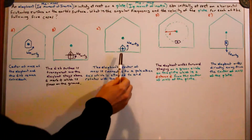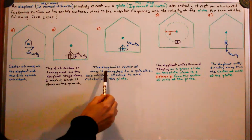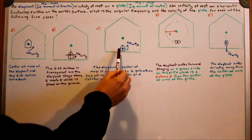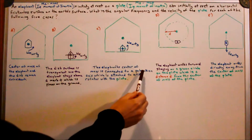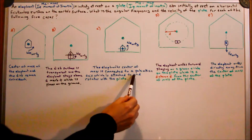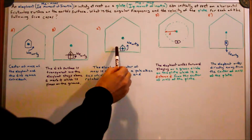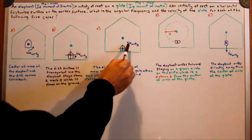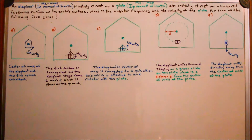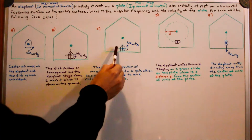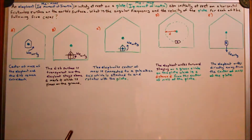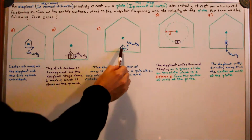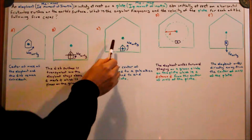Case C: the elephant's center of mass is connected to a pole, and the pole is on the plate with an axis which is attached to and rotates with the plate. So there's an axis here; the elephant is spinning around again with respect to ground at angular frequency omega sub e, and his center of mass is rigidly attached to a pole which is connected directly to the plate.